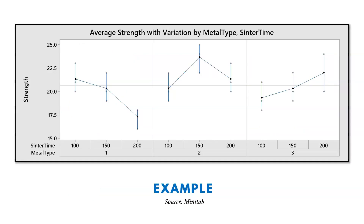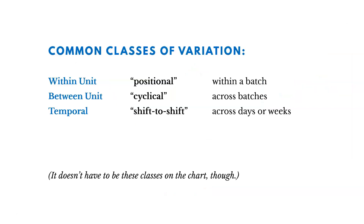We're not going to walk through this multivariate chart right now, but this is an example of what one looks like. We'll walk through them later and explain what each of the different things represent. Before we take a look at multivariate charts, it's important to talk about common classes of variation, because oftentimes these charts are broken out by these three classes.